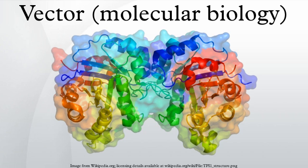The four major types of vectors are plasmids, viral vectors, cosmids, and artificial chromosomes. The most commonly used vectors are plasmids. Common to all engineered vectors are an origin of replication, a multi-cloning site, and a selectable marker.